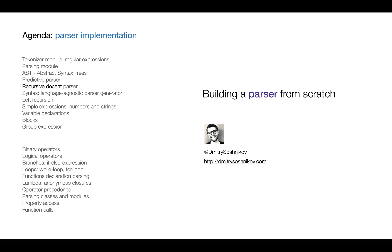In the current Building a Parser from Scratch class, we will be building a manual recursive descent parser, and we will see the whole implementation: building the tokenizer, parsing modules, constructing AST nodes, etc. Sometimes you don't need to go deeper into theory and just need to build an actual practical parser, so this class is exactly for you.